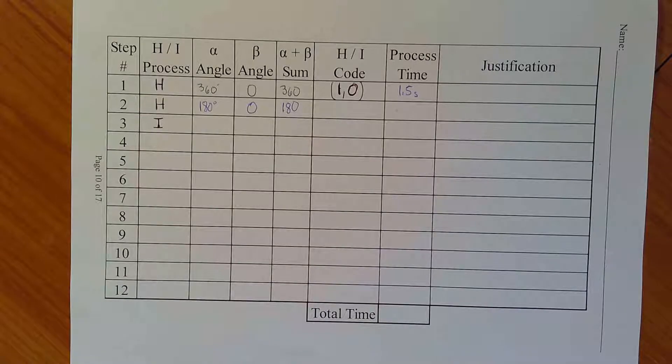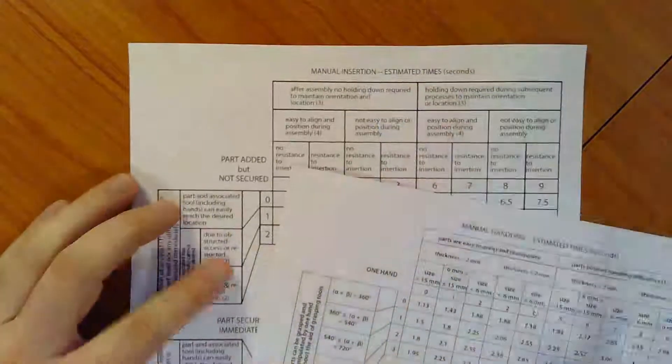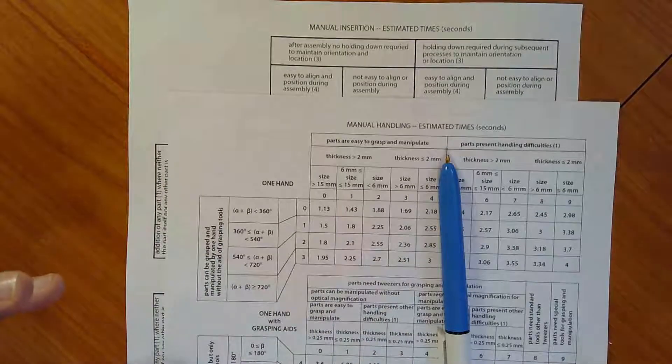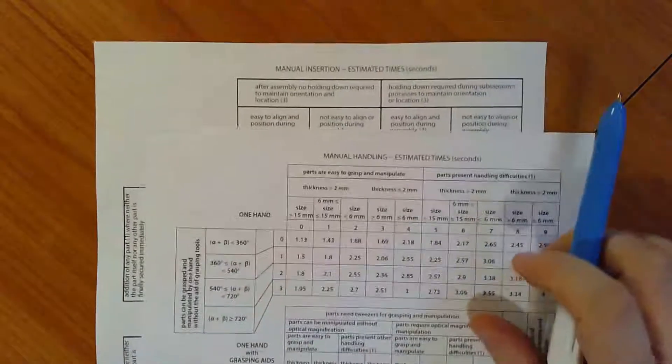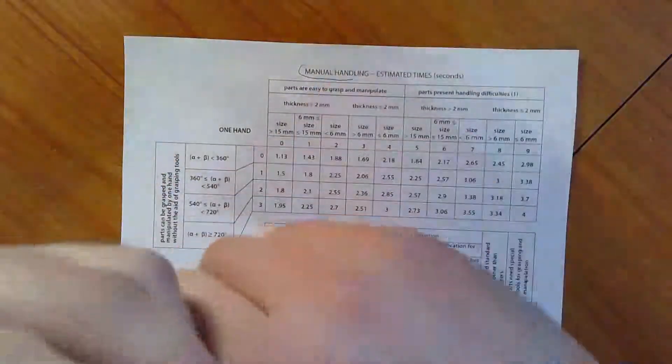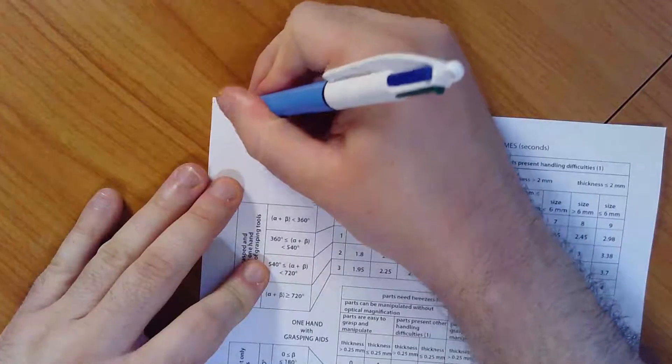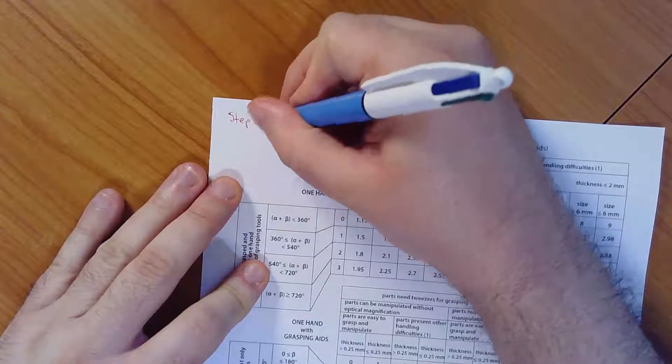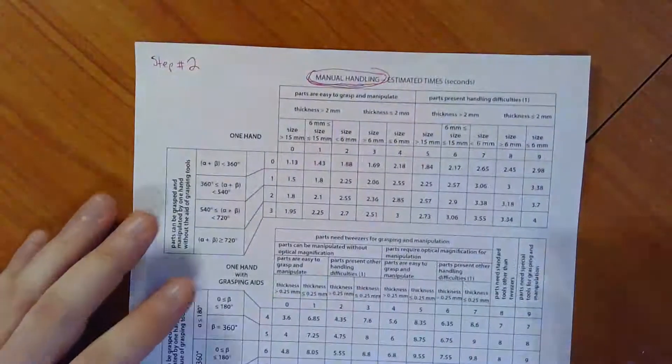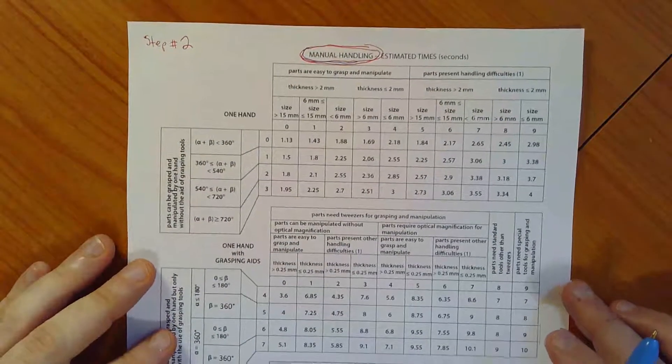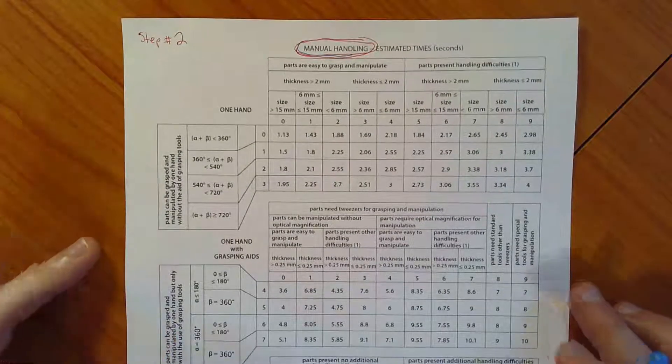Now, again, I've got two different charts that I could possibly use. One is an insertion chart. The other one is a handling chart. And remember, we're still handling. I've just picked up the part. I haven't inserted it yet. And so I'm going to get rid of the insertion chart and I'm going to stick with the handling chart. So manual handling. Let's do it in red so we're consistent. So manual handling. And this is going to be step number two. And I'm going to just keep track of these so that I can refer back to them if for some reason there is a question about why I picked a particular combination of numbers.